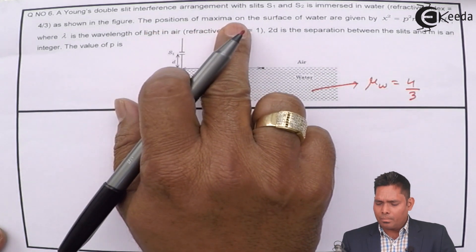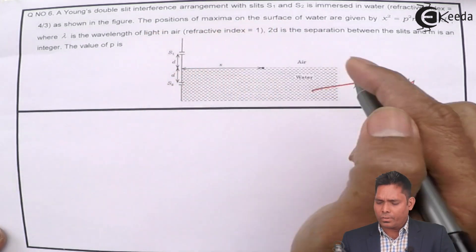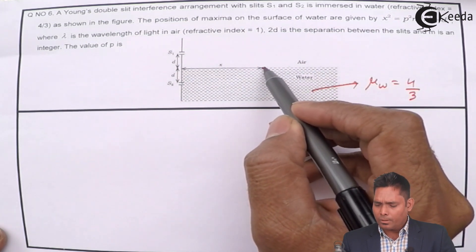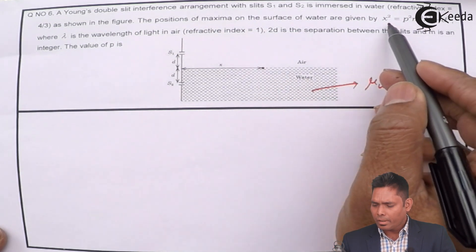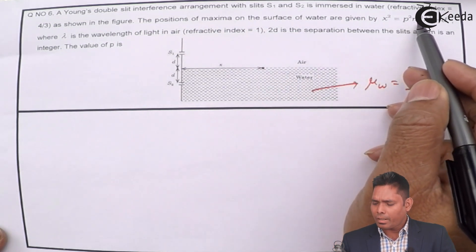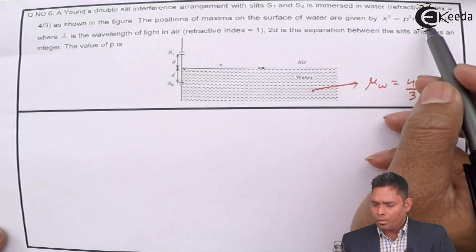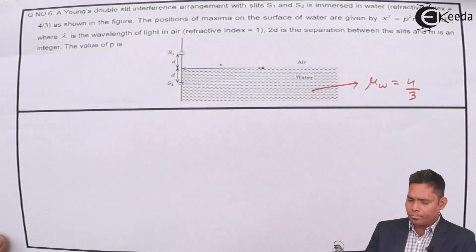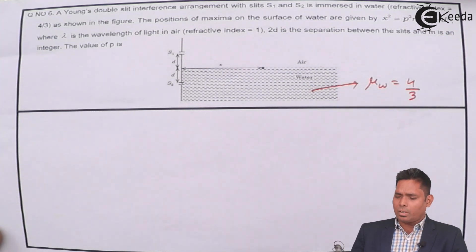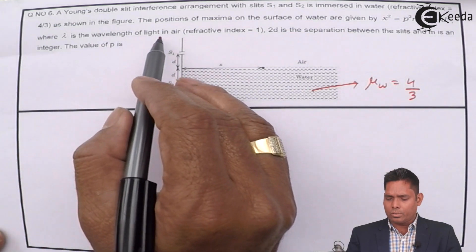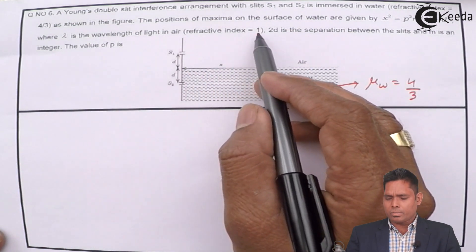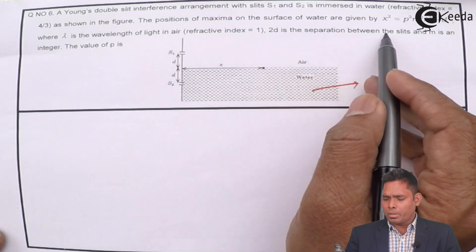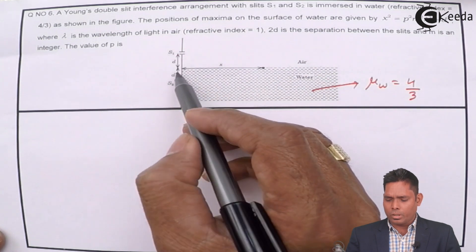The positions of maxima on the surface of water are given by the expression: x² = P²m²λ² − d². Here M is the order of the maximum, lambda (λ) is the wavelength of light in air (refractive index 1).